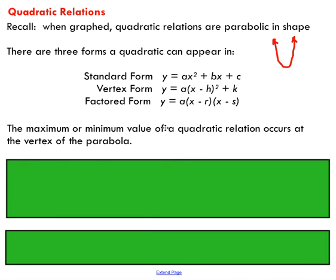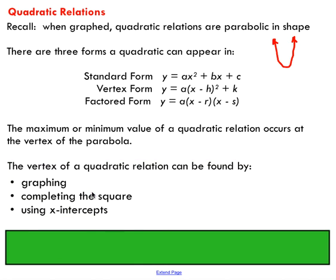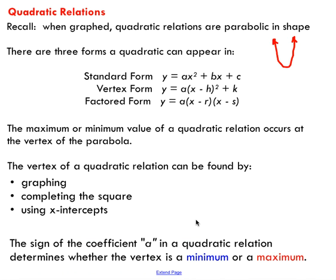The maximum or minimum value of a quadratic happens at the vertex of the parabola. In this video, we're mainly concerned with determining the vertex, and we're going to do that using three different methods. The first one we're going to see is graphing, completing the square, and using x-intercepts.